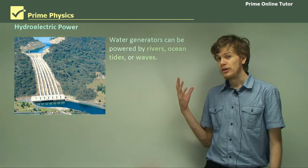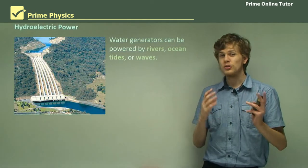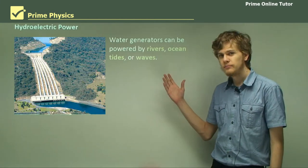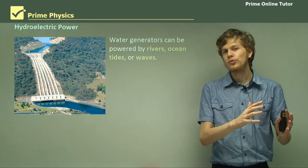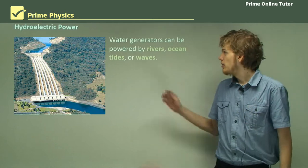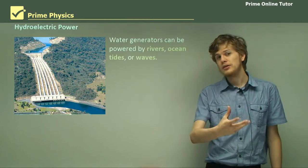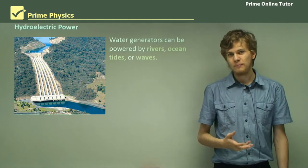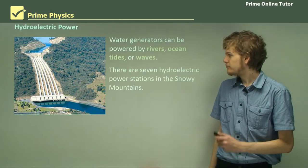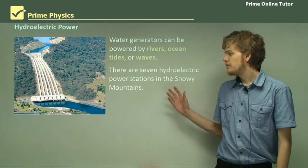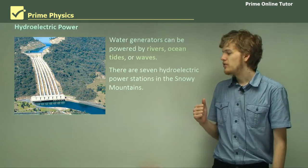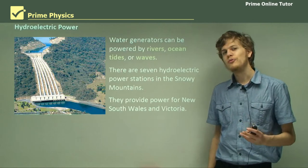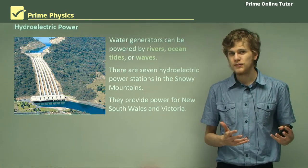Water generators don't have to be powered by just one source. There are water generators powered by rivers — by the flow of water in rivers — by ocean tides as they come in and out, or just by waves as they roll up and down. There are seven hydroelectric power stations in the Snowy Mountains of Australia, and these are responsible for the rest of the power in New South Wales.